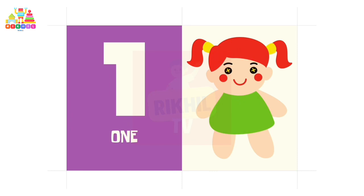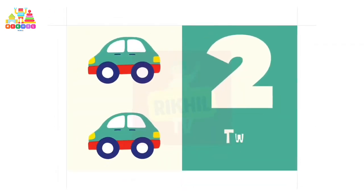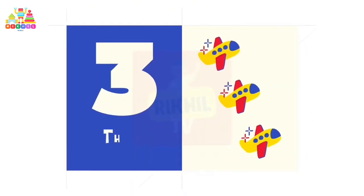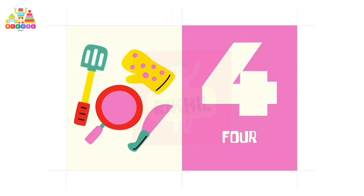One doll. O, N, E, 1. Two, two cars. T, W, O, 2. Three, three airplanes. T, H, R, E, E, 3. Four, four kittens. F, O, U, R, 4.